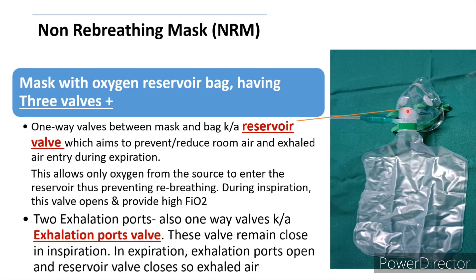During inspiration, the reservoir valve opens and oxygen enters the mask for the baby to inhale. The bag is connected to the oxygen source via oxygen tubing. When the reservoir valve is closed during exhalation, oxygen from the oxygen source fills the reservoir bag. The two exhalation ports also contain one-way valves, which remain closed during inspiration so that room air will not enter the mask.